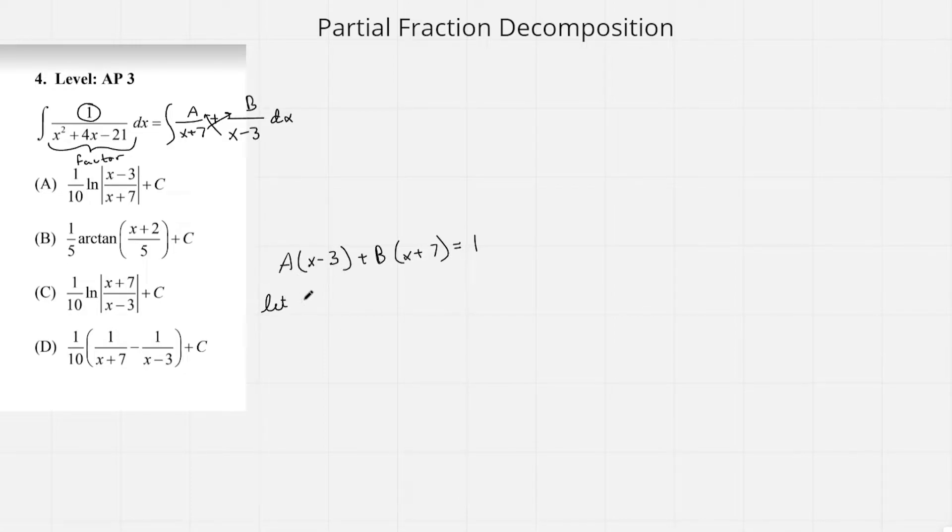In order to find out what A and B are, you're going to set x equal to some value to isolate each variable A and B. The easiest way to do that is find out whatever x can make it so A or B multiply by 0, so you're left with only one of them. In that case, for A it would be 3. So A times (3 minus 3) is 0 plus B times (3 plus 7) equals 1, so B is going to be times 10 equals 1, so B is going to equal 1 over 10.